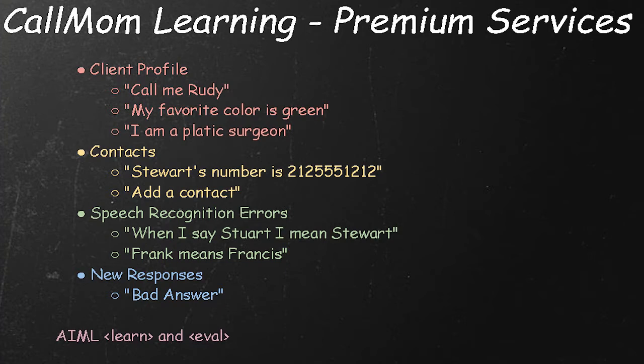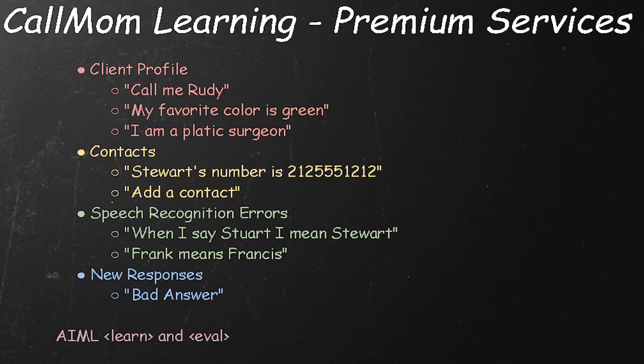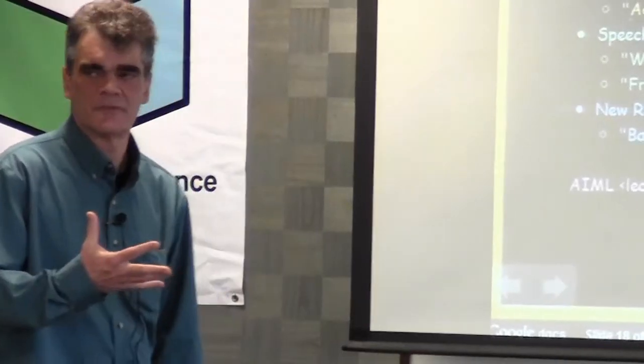There are a number of different learning features in Call Mom. You can use it to teach it your profile information — your name, favorite color, profession, age, gender, and so on — and it will remember all those things and potentially use them for making recommendations. You can teach it contacts by explicitly stating someone's contact information, or you can just say 'contacts' and it brings up the contact picker on the phone so you can select one of your contacts and have the bot learn that.